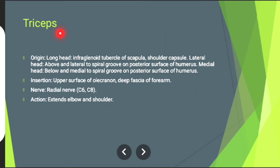Then triceps muscle. Its origin — long head: from infraglenoid tubercle of scapula and shoulder capsule; lateral head: above and lateral to spiral groove on posterior surface of humerus; medial head: below and medial to spiral groove on posterior surface of humerus.